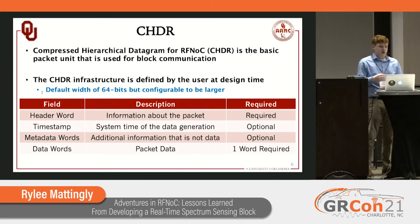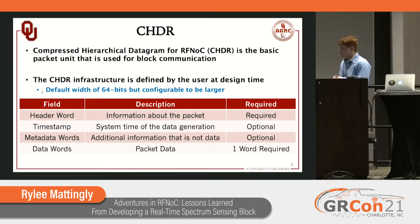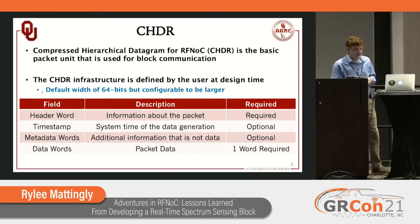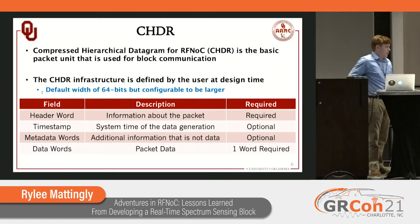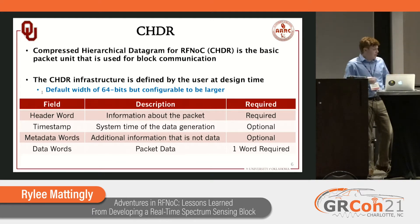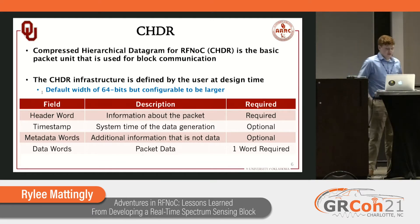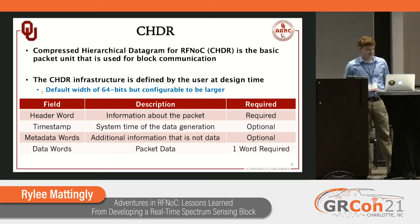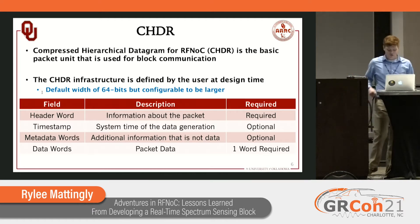RF-NoC uses a CHDR packet as the basic data packet — it stands for Compressed Hierarchical Datagram for RF-NoC. The CHDR infrastructure can actually be variable width; by default it's 64 bits. Each packet has a header word that gives you information about the packet, an optional timestamp field, optional user-defined metadata words, and then at least one data word. If there's no data, there's no need for a packet.